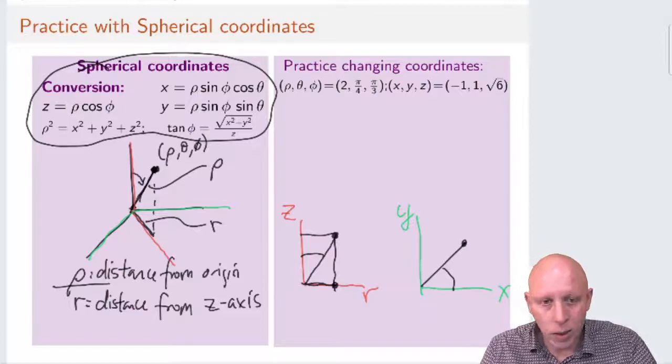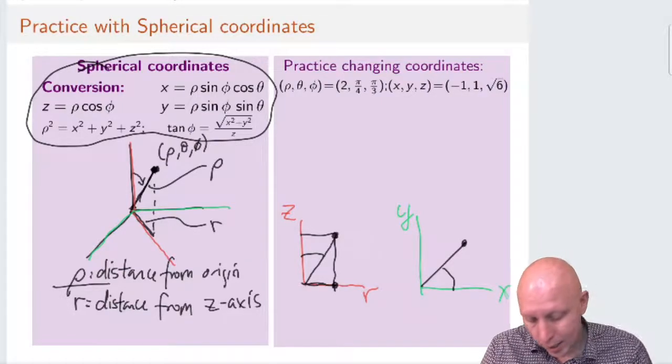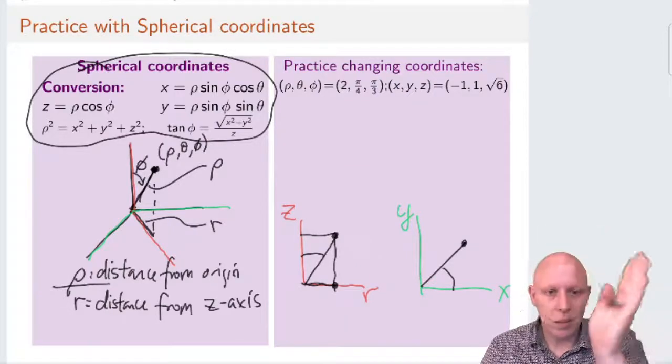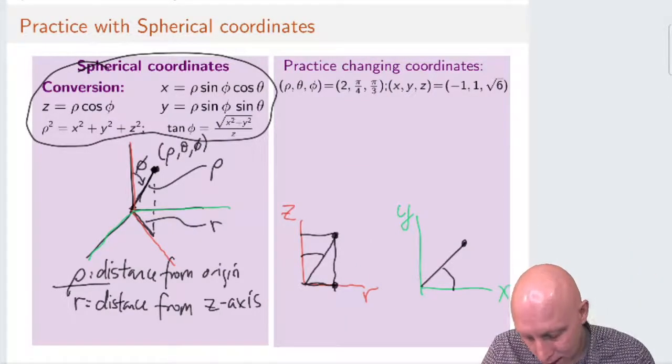that has in it this angle that this line makes with the z-axis. That's our phi.